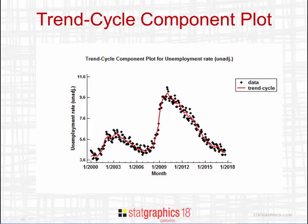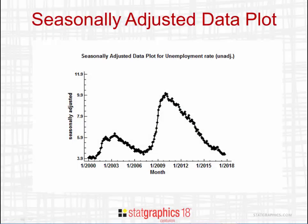Here you see a plot of the unemployment rates with the estimated trend cycle, which shows the long-term changes in the data having removed both the seasonality and the irregular part. In the next plot, you see the seasonally adjusted data, which has those regular ups and downs caused by consistent differences between January, February, and so forth removed from the data.